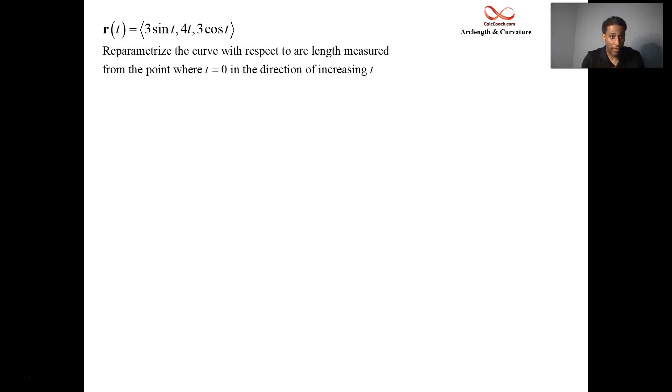And the connected formula is the arc length function. Well, you take the derivative, three cosine T, four, negative three sine T. You take the magnitude. This is the same one we had in a previous example, but a little jumbled up, but the magnitude is five.